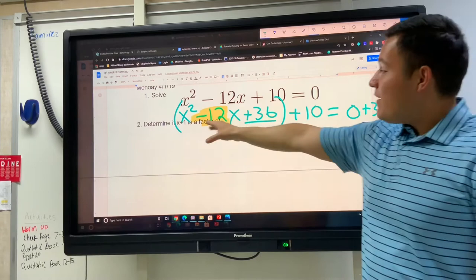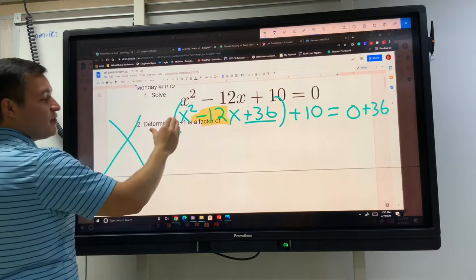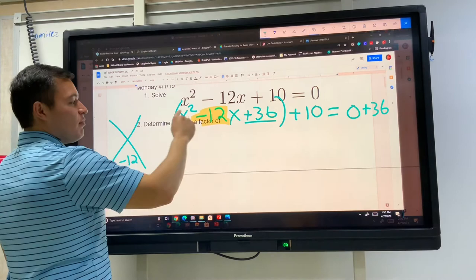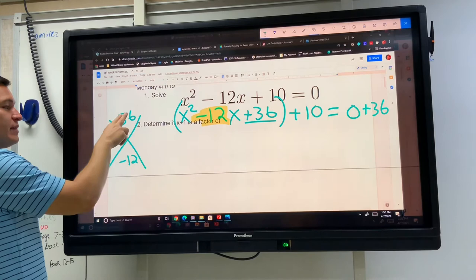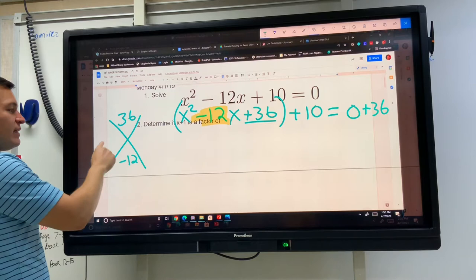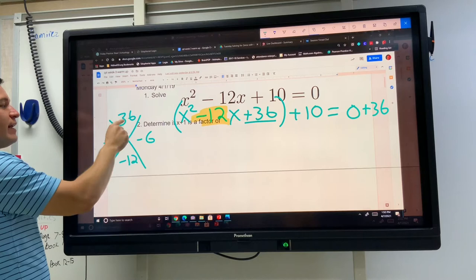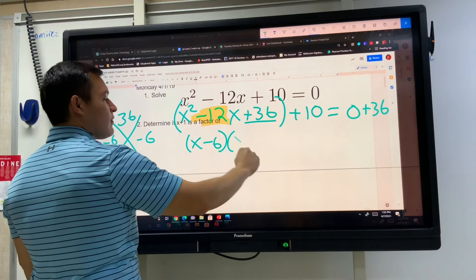So let's look at this. If I try to factor this thing that I have in parentheses, if I just look at what I have in parentheses then my B is negative 12, my A times C is 36, and what would multiply to make 36 but add to make a negative 12? Things that add to make a negative 12 would be a negative 6 and a negative 6, and negative 6 times negative 6 will multiply to make that 36, so then the factors are x minus 6 and x minus 6 plus 10 equals 36.